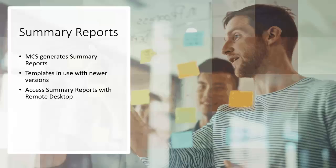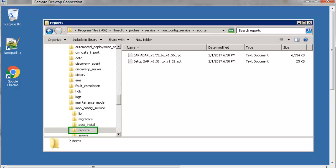Upon successful deployment, MCS generates a summary report for each template that is in use but has a newer version. MCS won't update a template when it's in use for a configuration profile. We'll use Remote Desktop to look for summary reports. Here I've used Remote Desktop to log into the primary hub, and I've navigated to the Reports folder where the summary reports are stored.